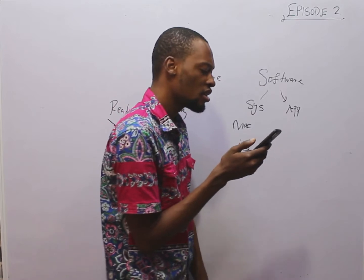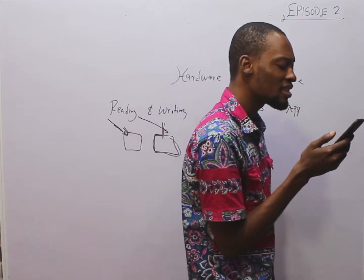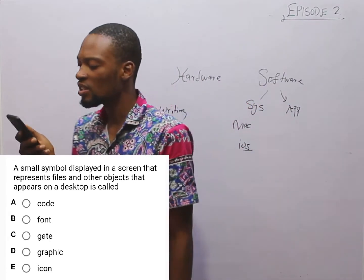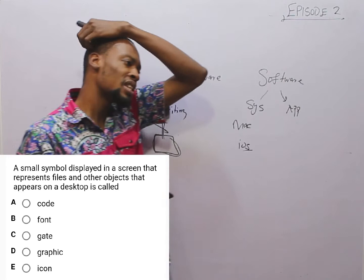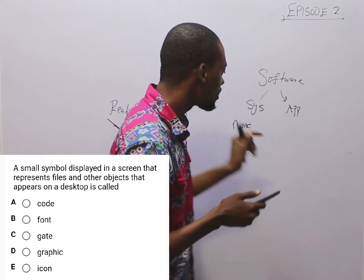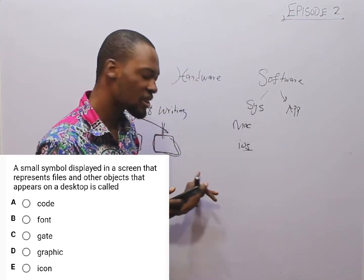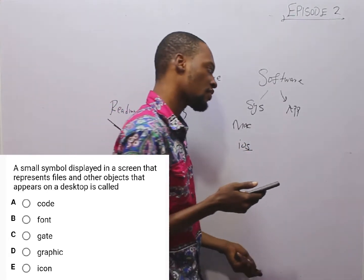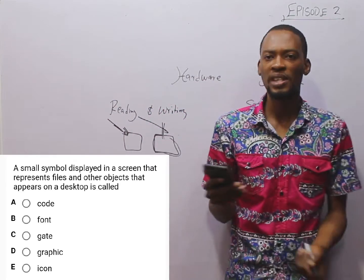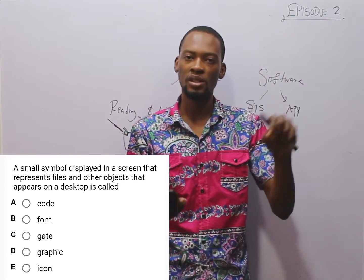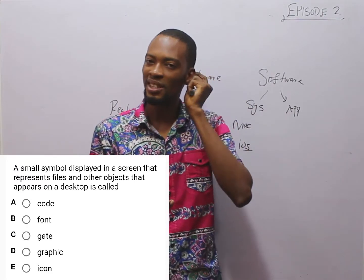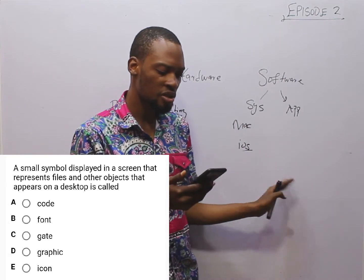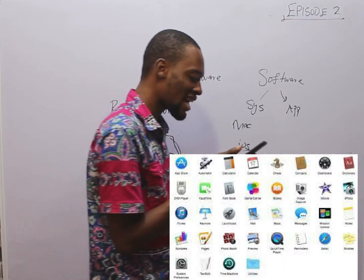The next question says: a small symbol displayed on the screen that represents files and other objects on the desktop is called what. If you've used a computer before, on the desktop you'll see different apps displayed as small designs on the screen — those are referred to as icons. Once you click on them, they take you to the main app or the app runs. Most of these icons are shortcuts. They are pictures or image diagrams displayed on the screen to help the user navigate the system.